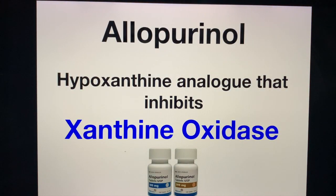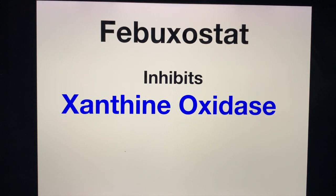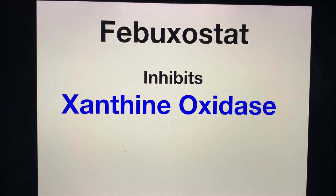This clinical correlate will surely come out in your exams. The drug allopurinol is a hypoxanthine analog that inhibits xanthine oxidase, and it is used for treatment of gout — specifically, it is the drug of choice for chronic gout. For acute gouty attacks, the drug of choice is colchicine. Another drug gaining popularity is febuxostat, which also inhibits xanthine oxidase and treats hyperuricemia or gout. The advantage of febuxostat over allopurinol is fewer hypersensitivity reactions, particularly Stevens-Johnson syndrome.